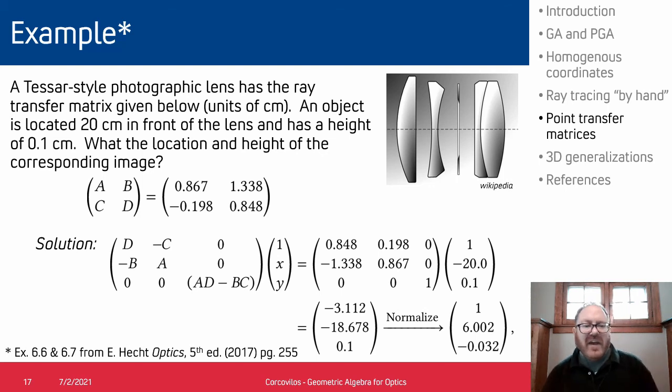Here's a more complex example—I pulled this example out of Hecht. So here we're given the ray transfer matrix for a particular photographic lens and you're asked to find the image from a particular object. And so you know in Hecht this takes about a page and a half to get the answer, but we can do it here in two lines, basically just by forming the point transfer matrix, multiplying that into the object point, normalizing the result, and then we can read off the position and x and y coordinates of the final image.